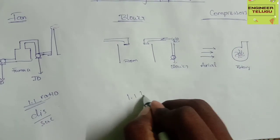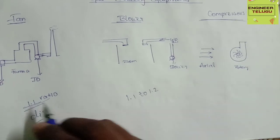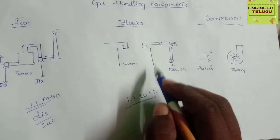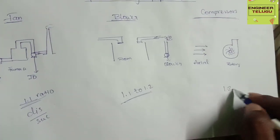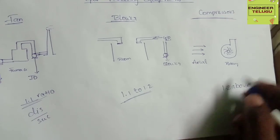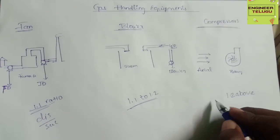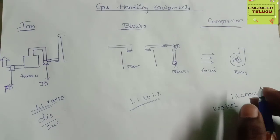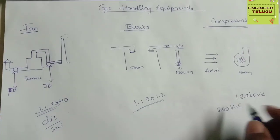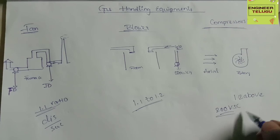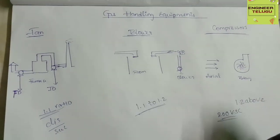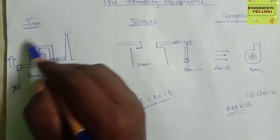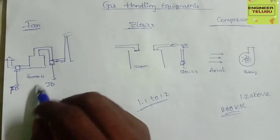The blower is 1.1 to 1.2 pressure ratio. The pressure will increase from suction to discharge. The pressure is 1.2 times, and for a compressor it can go up to 200 kg per centimeter square. The compressor will boost to high pressure.